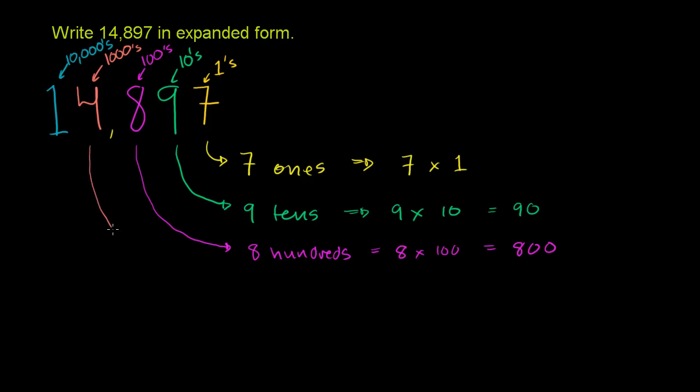And then the 4. I think you get the idea here. This represents, in the thousands place, it represents 4 thousands, which is the same thing as 4 times 1,000, which is the same thing as 4,000.